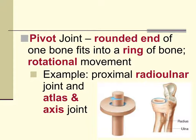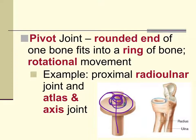The pivot joint involves a twisting or rotational movement, where you have a round end and a ring. A round object spins inside that ring. Turning in a circle is the type of movement that happens at a pivot joint. Examples include the proximal radioulnar joint, between the radius and the ulna, and the C1–C2 joint, between your atlas and axis. That joint is what allows you to shake your head no.